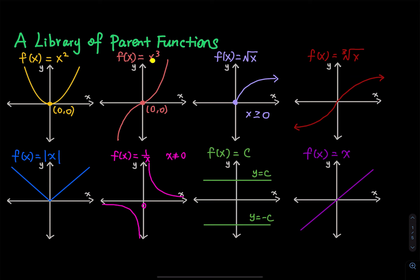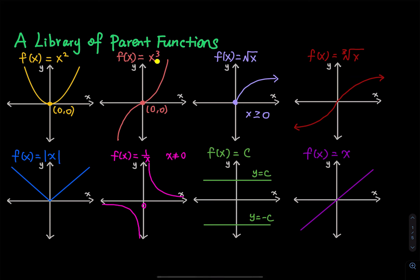If you raise the power from second to third — x to the third power — the graph looks like a parabola with a broken left arm. The point zero comma zero is the origin. For x squared and x to the third, x can be any real number: positive, negative, or zero.